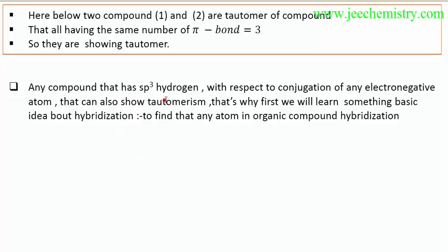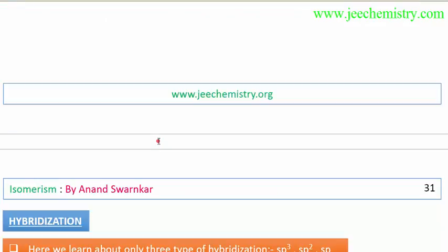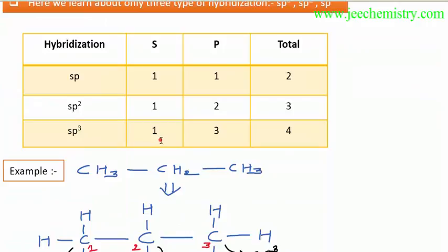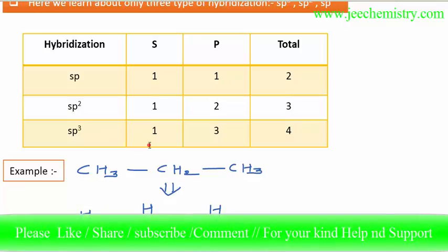Any compound that has sp3 hybridization with respect to conjugation of any electronegative atom can show tautomerism. That is why we will first learn something basic about hybridization, so we can find the hybridization of any atom in organic compounds. By knowing the hybridization, we will get an idea about which type of compounds can show tautomerism, because the hydrogen that migrates to the more electronegative atom must be of sp3 hybridization. This must be learned by students who want to learn tautomerism.